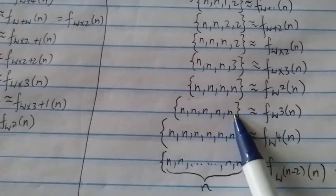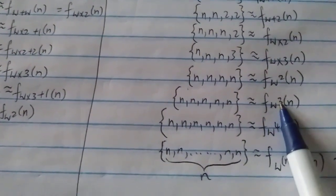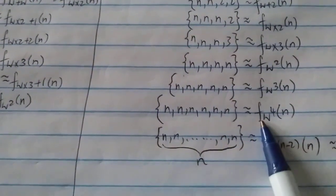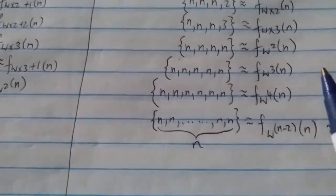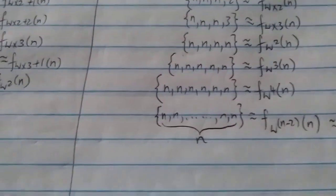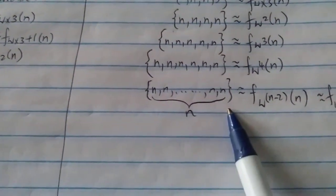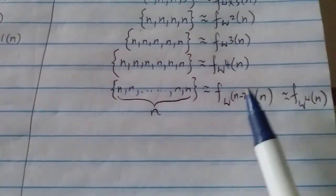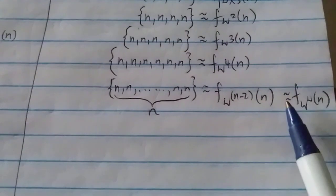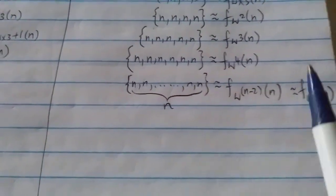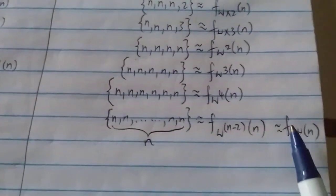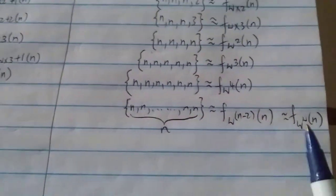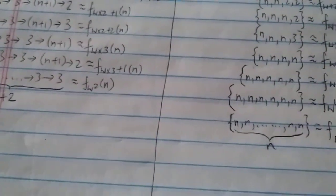5-entry BEAF is already f(ω³,n), and 6 n's gives f(ω⁴,n). You can see the pattern: n entries with n n's gives growth rate around f(ω^(n−2), n). In other words, the limit for linear array notation is around f(ω^ω, n) - way faster than the regular chain arrow notation.